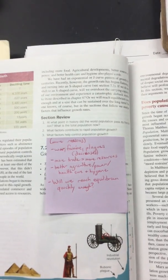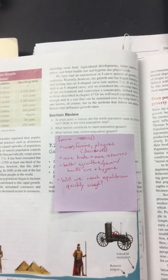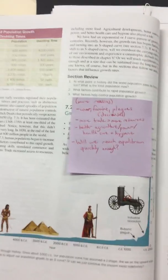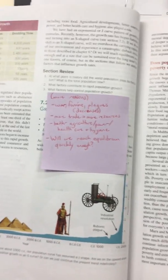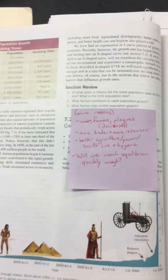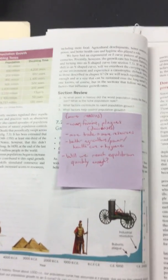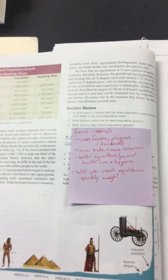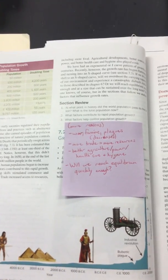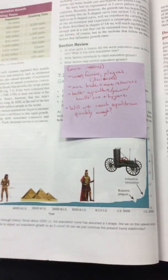But sanitation, hygiene is something that relates to population, right? So that's what this section kind of talks about. Will we reach equilibrium? Will we reach that carrying capacity and have the S-curve of population growth slow fast enough? I don't know.